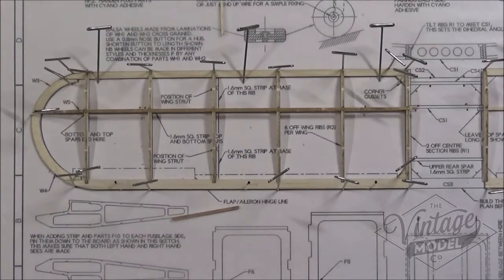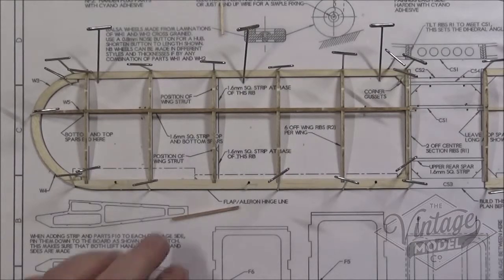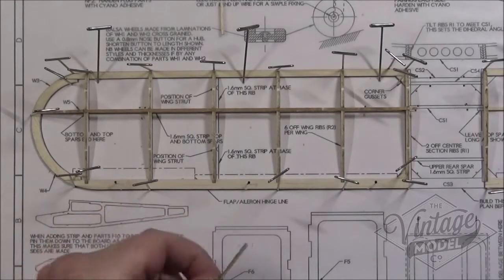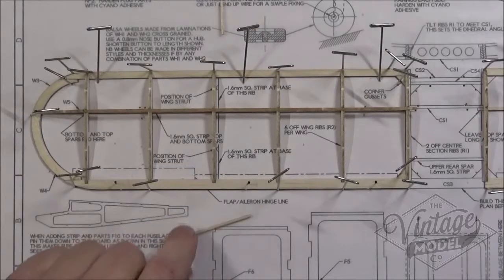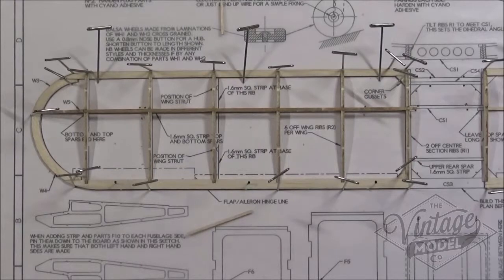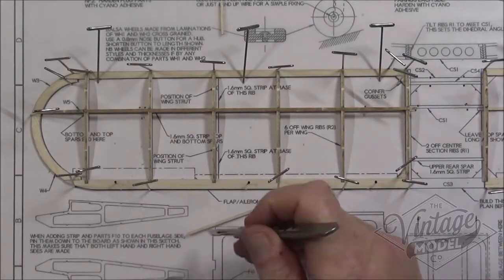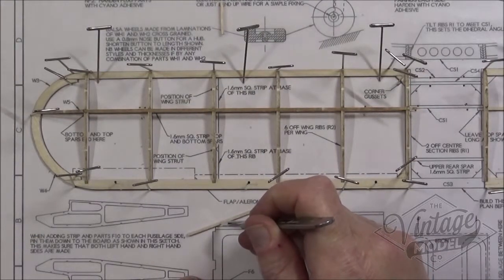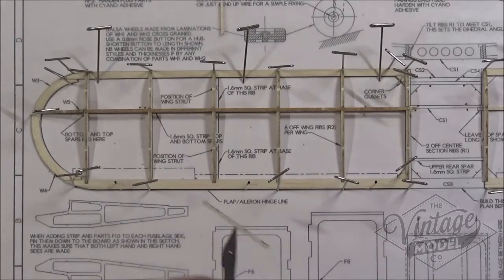And then the last job is to install and glue these two support strips for when we attach the wings to the fuselage, for the outer wing struts. So I've already cut these to size and test fitted them.